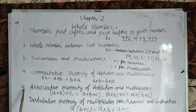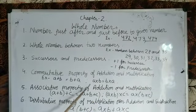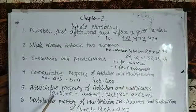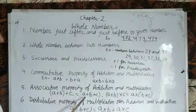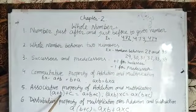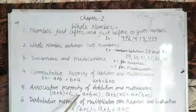Now the fifth property is associative property of addition and multiplication. In this, a plus b plus c equals a plus b plus c. By solving first this bracket and then adding to the c number, we get the same number.